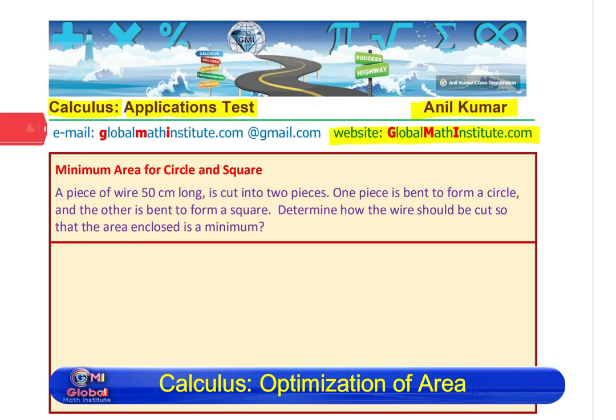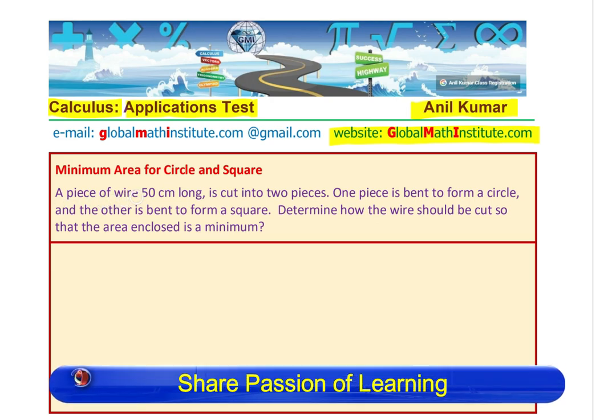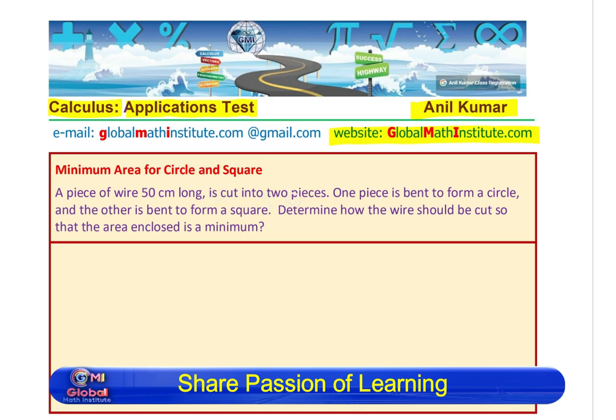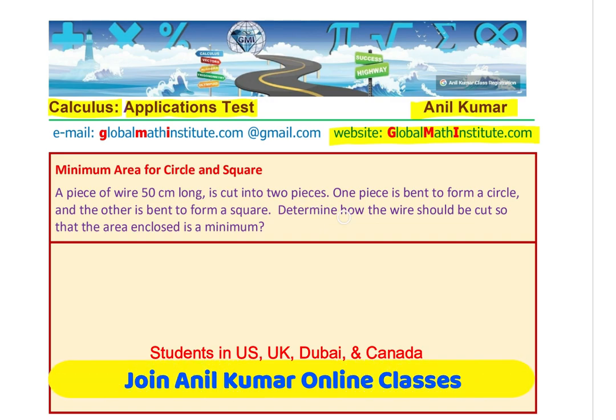The question here is based on minimum area for circle and square. A piece of wire 50 cm long is cut into two pieces. One piece is bent to form a circle and the other is bent to form a square. Determine how the wire should be cut so that the area enclosed is a minimum.